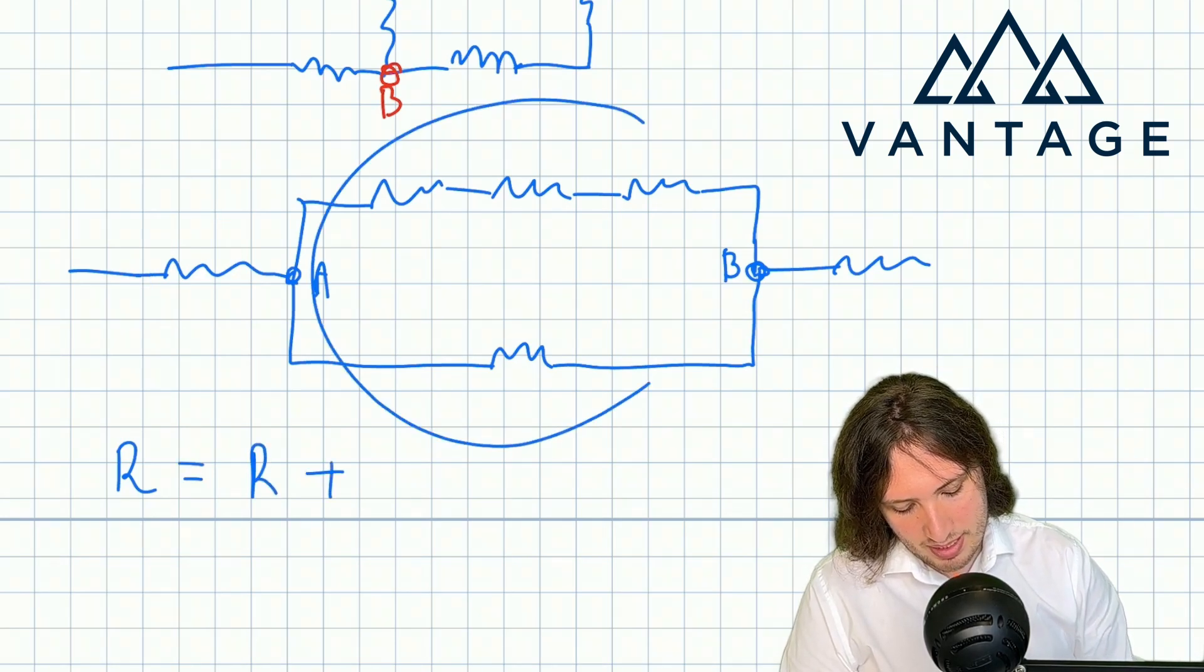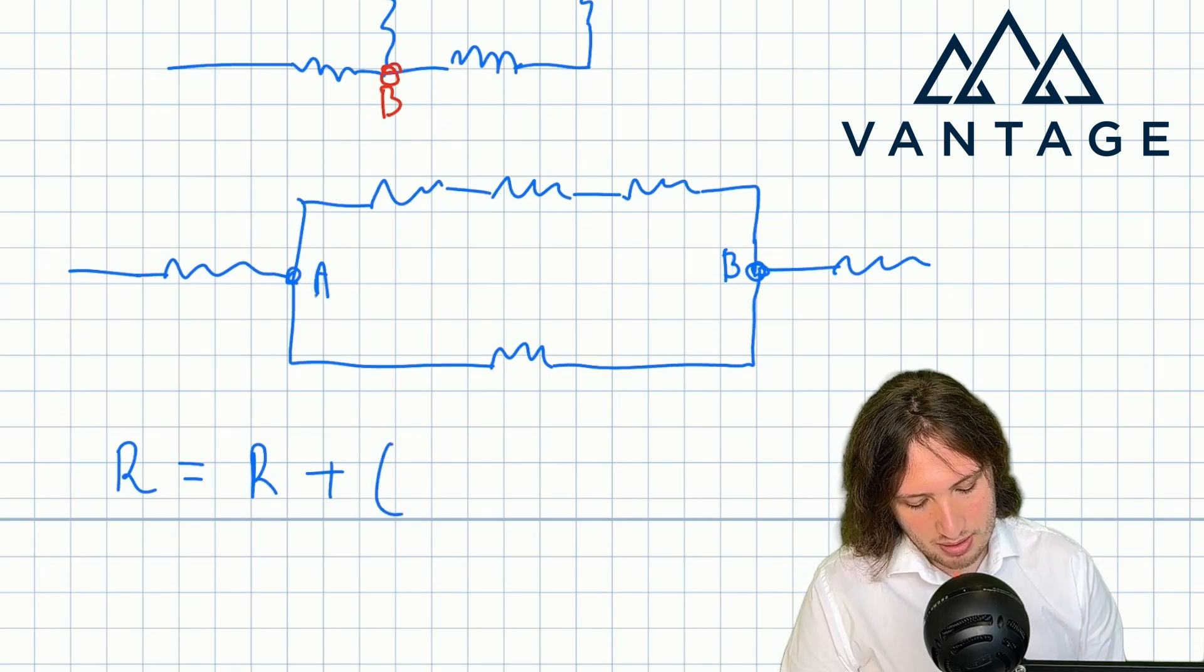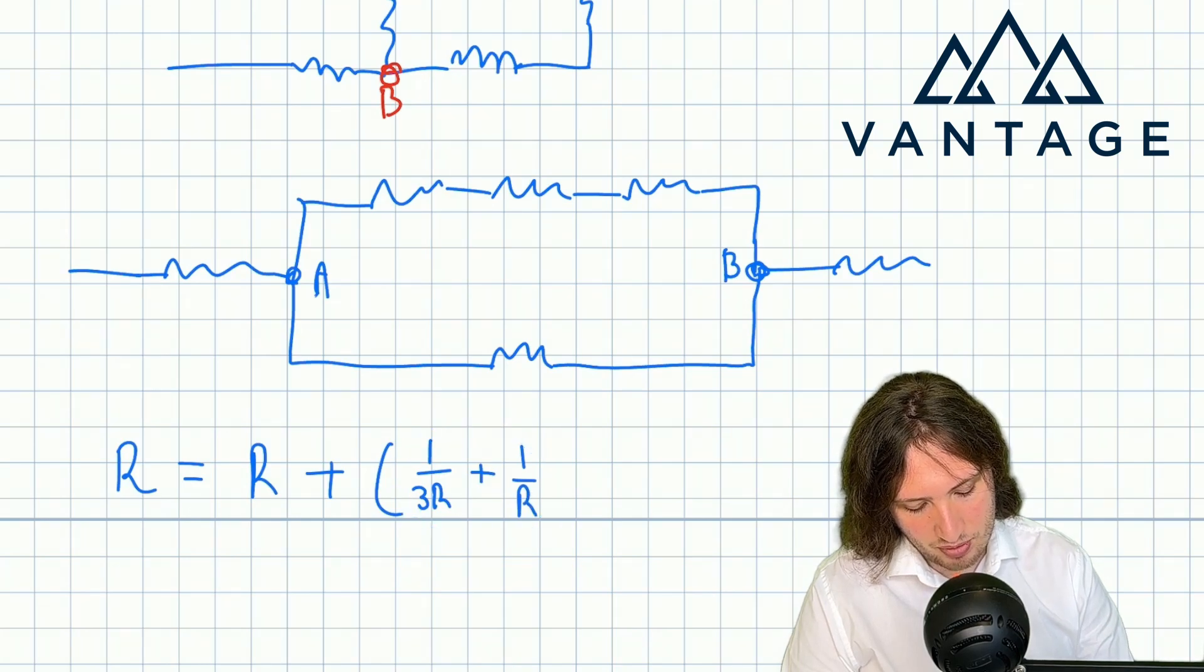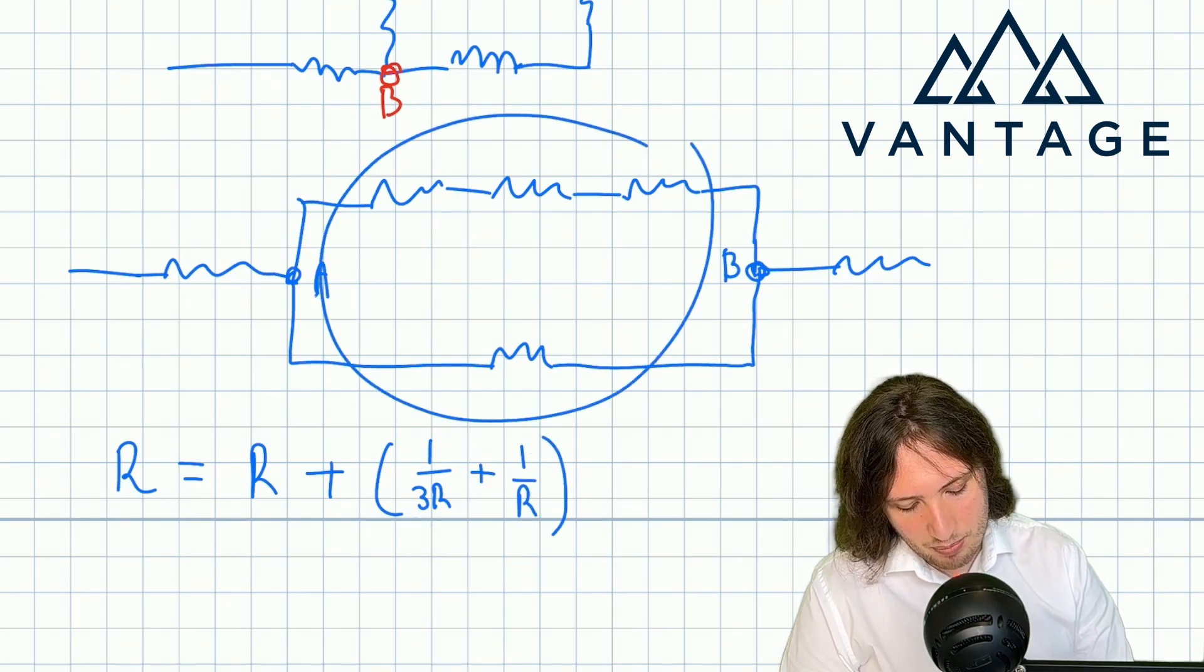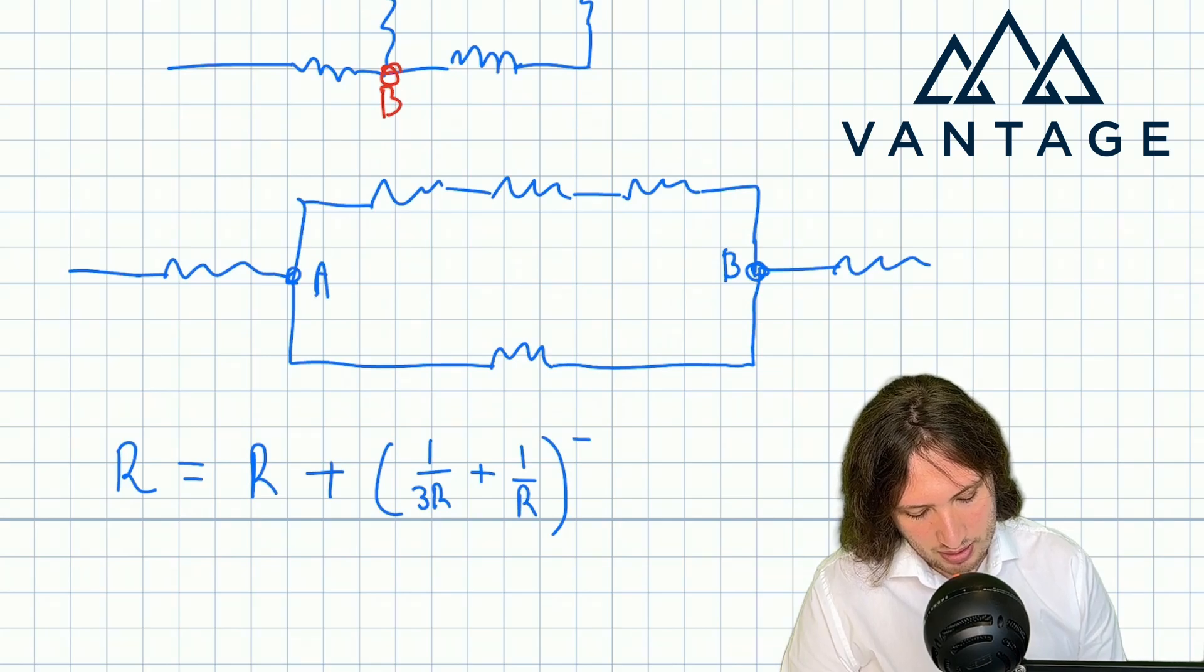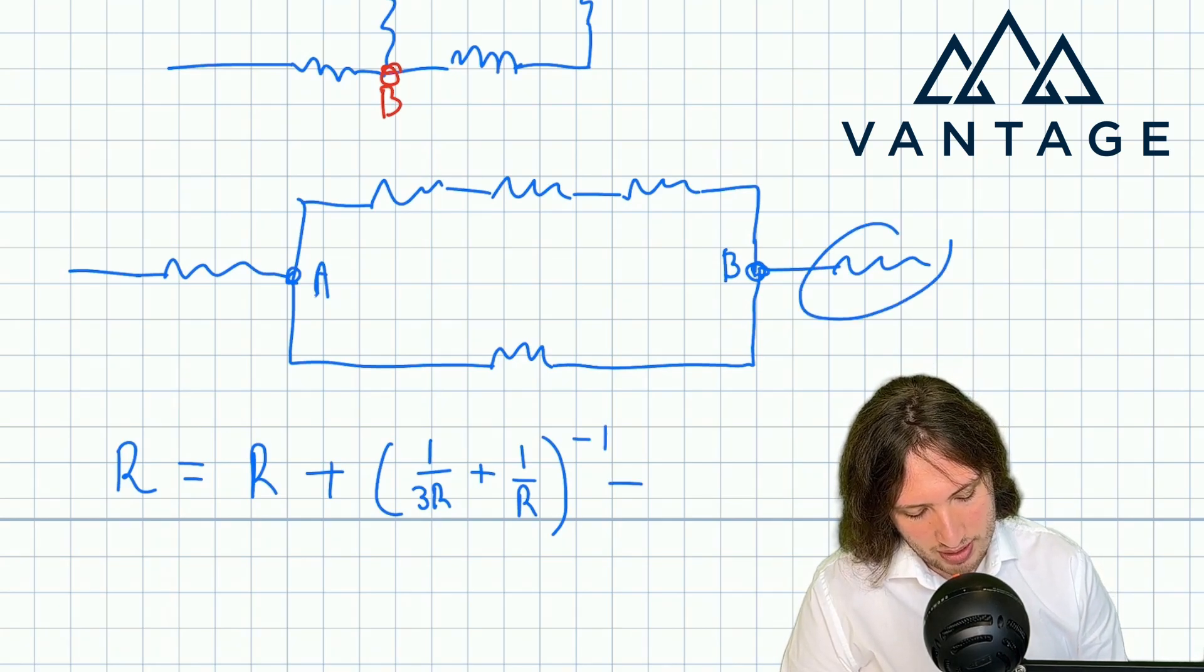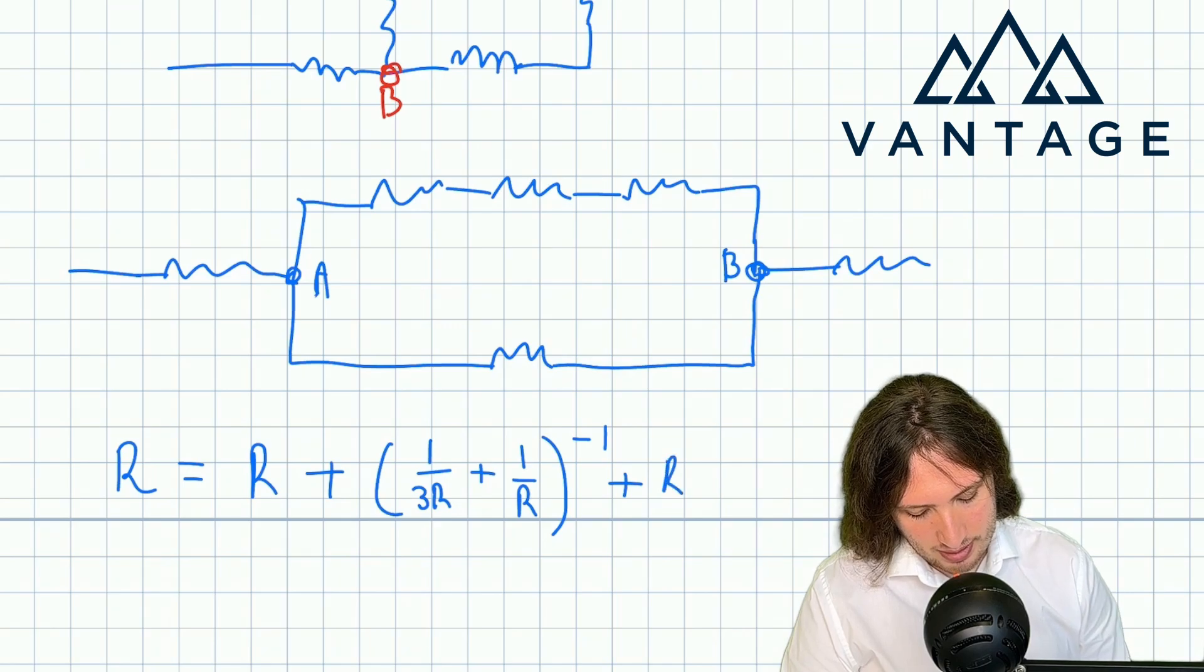In series with this parallel combination. So one of the parallel branches has a resistance 3R, one has R. So if I add these reciprocals together that gives me the reciprocal of the resistance of this portion. So that is going to be the actual resistance of that portion.